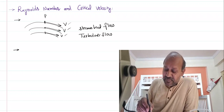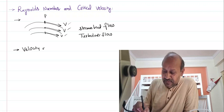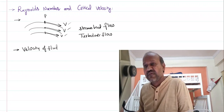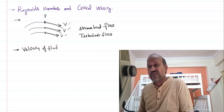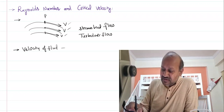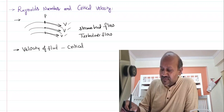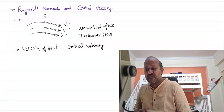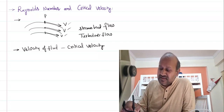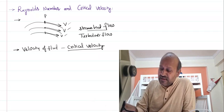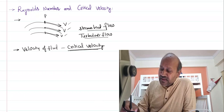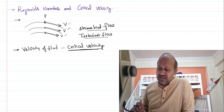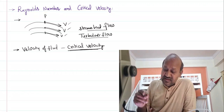Whether the fluid flow is streamlined or turbulent is decided based on the velocity of the flow. If the velocity of the fluid is less than a particular value, the flow will be streamlined; more than that value, it becomes turbulent. That particular velocity is called the critical velocity — the velocity at which streamlined flow turns into turbulent flow. At critical velocity, it is the junction where the fluid flow converts from streamlined to turbulent.